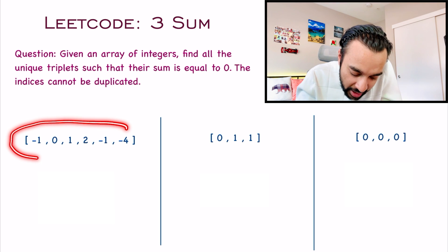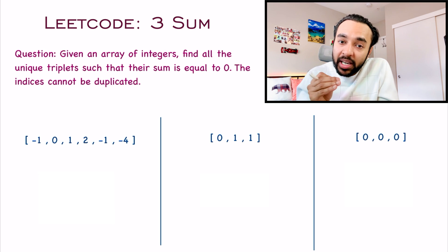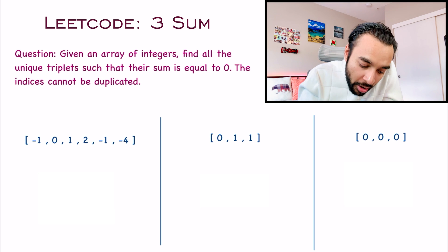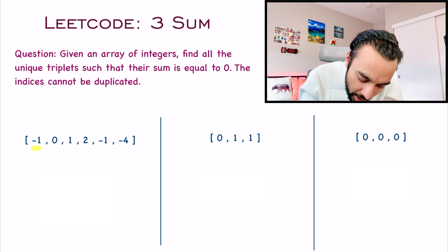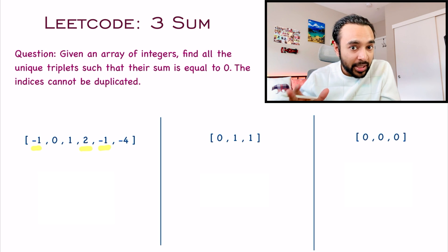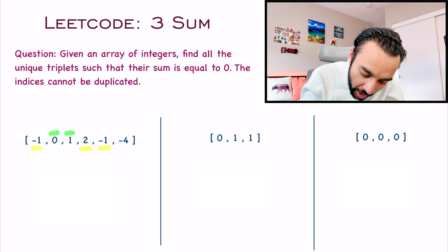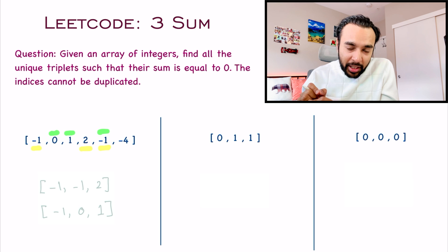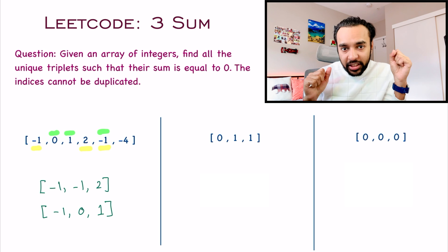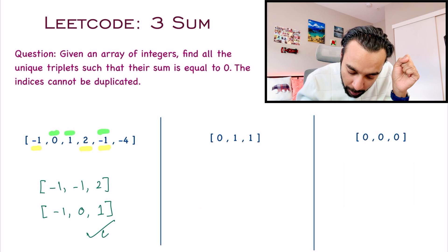In our first test case, you can see that I have this array. What are some of the triplets that when summed will give you the total sum as zero? First of all, I can find a triplet as minus one, minus one, and two. If you add all of them, you will get the sum zero. And similarly, you can get one more triplet: zero, one, and minus one. This particular array will have two unique triplets by which you can form the total sum as zero. So for this particular test case, these two triplets will be your answer.